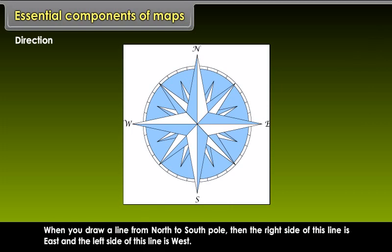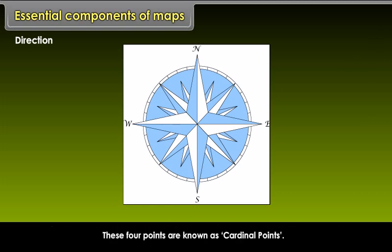When you draw a line from north to south pole, then the right side of this line is east and the left side of this line is west. These four points are known as cardinal points.